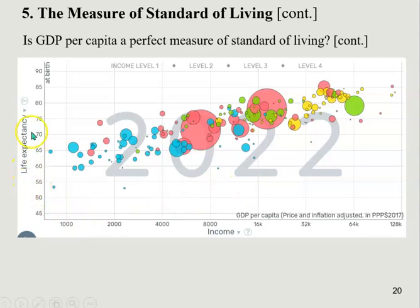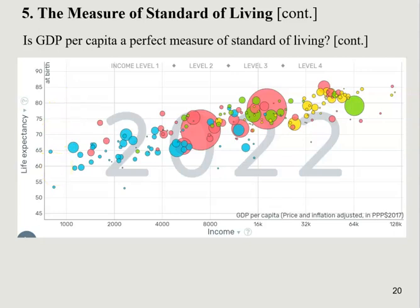Life expectancy is a pretty commonly used measure of standard of living, because how long you're going to live depends upon many things — your income and wealth, but also education, work-life balance, environmental quality, and access to healthcare treatment. All of these could be directly or indirectly measured by life expectancy. Most importantly, as you can see, there is a pretty clear positive correlation between GDP per capita and life expectancy. In other words, in richer economies, people tend to live longer.